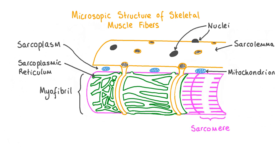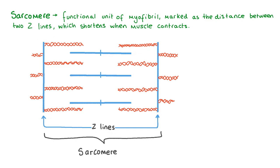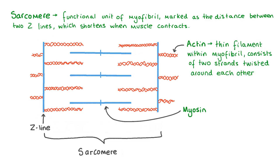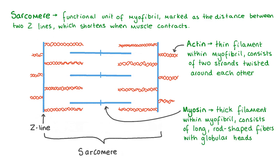Myofibrils are made up of many repeating functional units called sarcomeres. Let's take a closer look at one sarcomere to see how its different parts help the muscle to contract. The length of a single sarcomere is marked as the distance between two Z lines, and this distance shortens as the sarcomere as a whole shortens when the muscle contracts. Sarcomeres are made up of two protein myofilaments: actin, shown in red, and myosin, shown in blue. Actin is the thinner filament made up of two strands of protein twisted together. Myosin is thicker, a long rod-shaped fiber with globular heads that project outwards. Myofibrils have alternating lighter and darker bands due to the composition of actin and myosin, making them look stripey or striated.